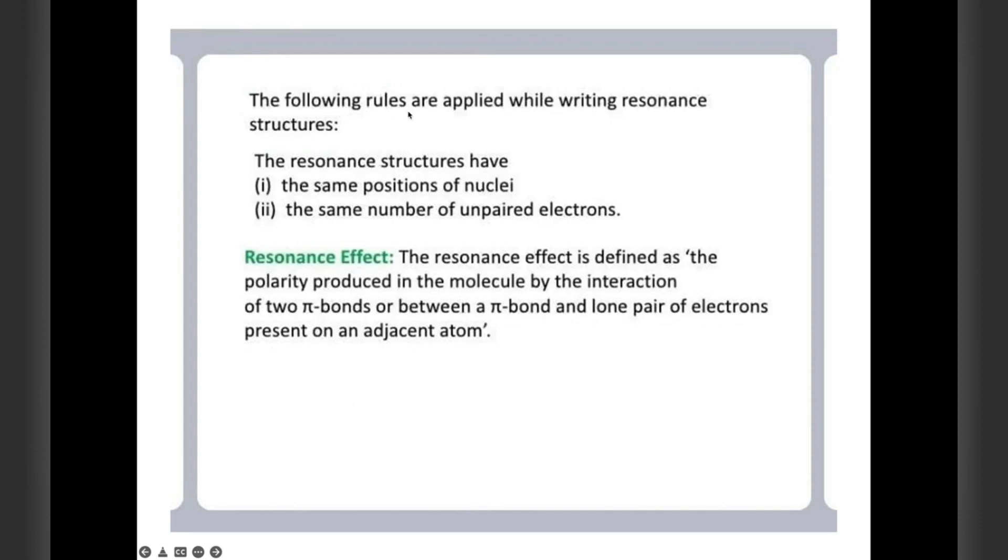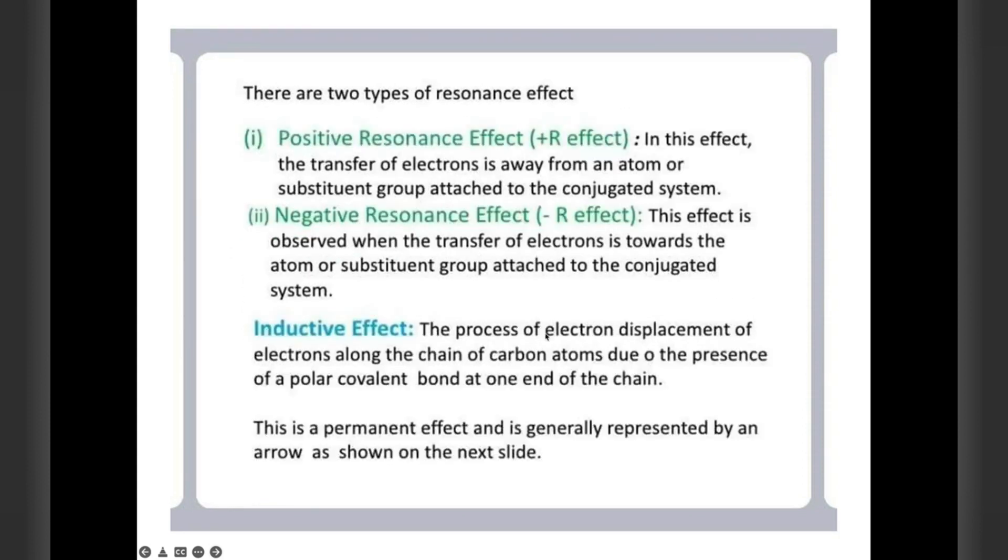There are certain rules which you have to apply while writing a resonance structure. First is the same position of the nucleus. Second, the same number of unpaired electrons. The resonance effect is defined as the polarity produced in the molecule by interaction of two pi bonds or between a pi bond and lone pair of electrons which is present in the adjacent atom. This is just the polarity which is formed by interaction of either two pi bonds or a pi bond and a lone pair of electrons.